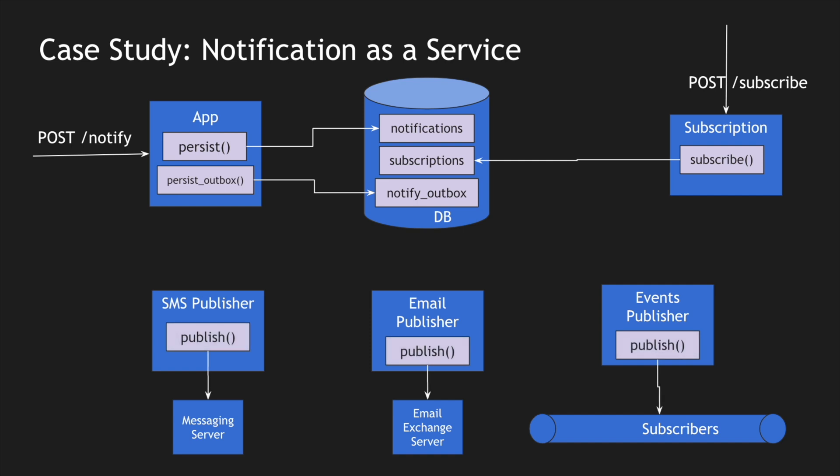For the event publisher, JSON messages or events are published to consumers via a queuing system. There is also an email publisher that sends emails based on the message content. Additionally, there is an SMS publisher for sending quick messages to SMS subscribers. All these publishers listen to the notify outbox table and, depending on the notification type and the product subscriptions, directly notify the subscribers.